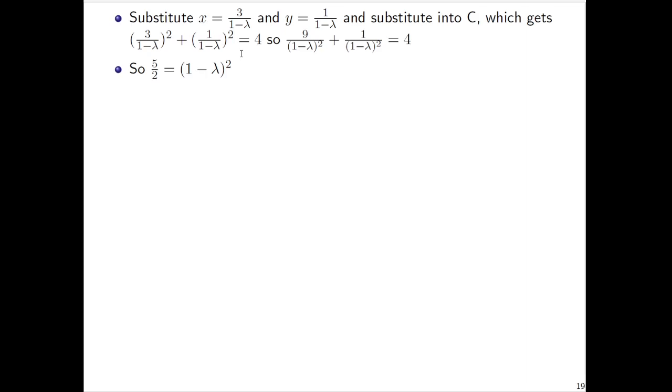We can now square root both sides, which introduces a plus or minus sign. Do a little rearranging work. You're going to get λ = 1 ± √(5/2).